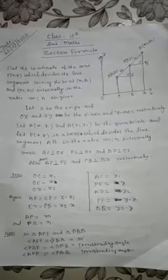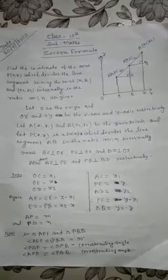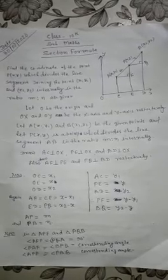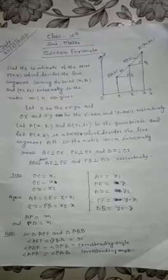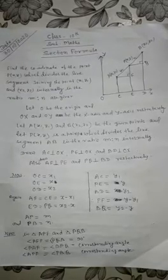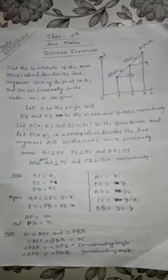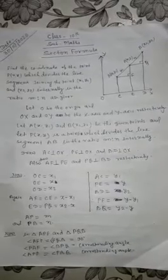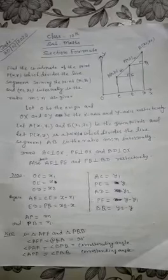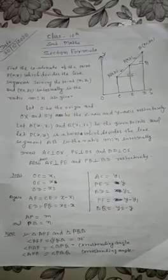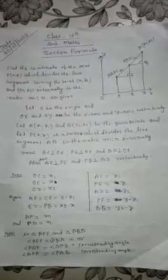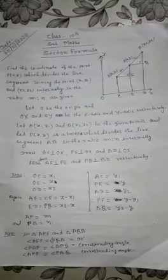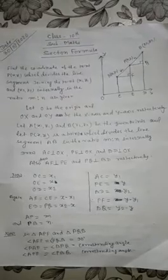In this section, we have to find out the coordinate of a point which divides a line segment in the given ratio. Suppose AB is a line, the coordinate of A is (x1, y1) and the coordinate of B is (x2, y2). P is any point on the line AB which divides AB in the ratio M:N. We have to find out the coordinate of point P, that is x and y.